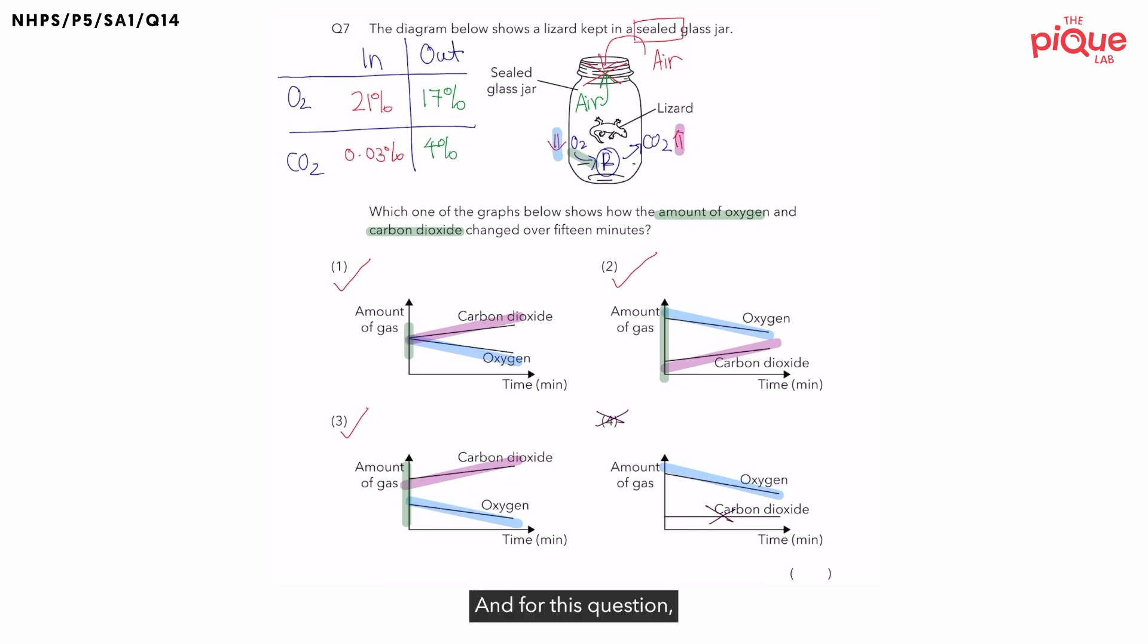And for this question, we will be focusing on the starting volume of the gases. I will be focusing on the air that we breathe in. So, in the air that we breathe in, is there more oxygen or more carbon dioxide? The air that we breathe in contains more oxygen. Therefore, oxygen should have a higher starting point.